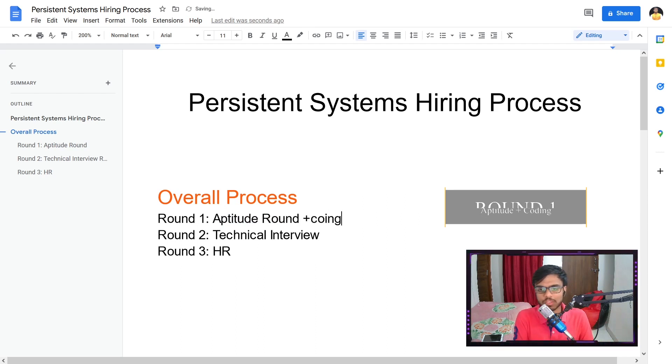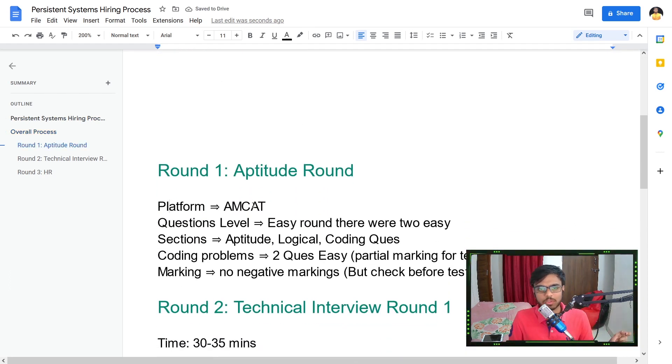So the first round would be an online test, it would be aptitude plus coding. So this would also have two coding questions. The platform would be Amcat and the questions would be pretty easy. They would have aptitude, logical reasoning, puzzles and very easy and simple questions. Along with that you would also have two coding questions. Now these coding questions are the most important for this particular round. The coding questions are also pretty easy. If you solve LeetCode or GFG they would be like easy level questions, not even medium. There is a partial marking available on Amcat so even if you fail for certain test cases you might get half of the marks. There is no negative marking so make sure if you don't know the answer, do guesswork.